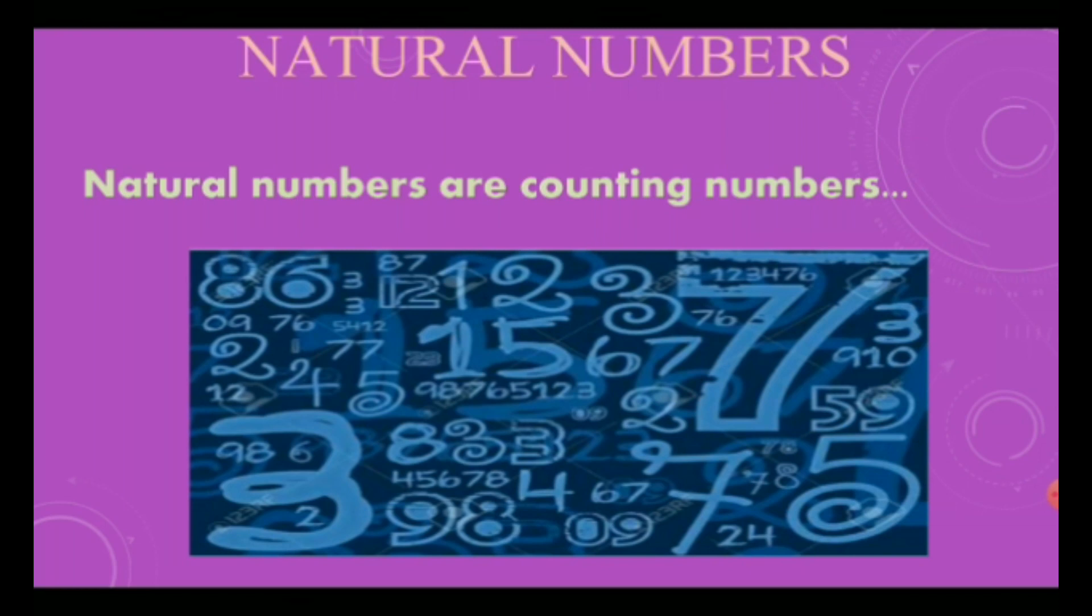Natural numbers can be any number. It can be 7, it can be 3, it can be 67, it can be 833, it can be 9575. Any number till infinite. But remember it only starts with 1. It does not have 0.